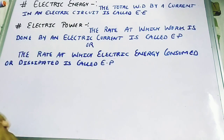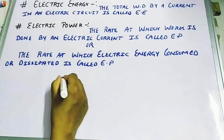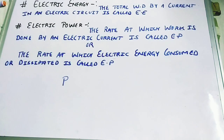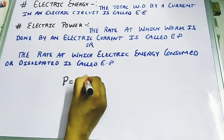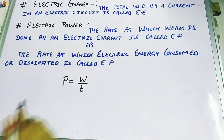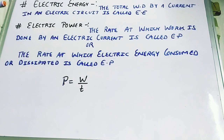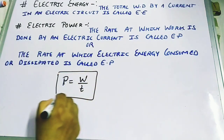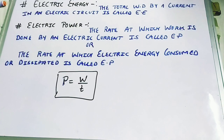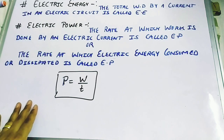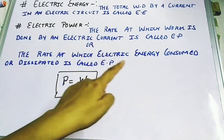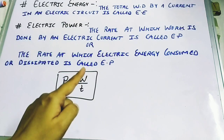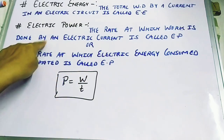What is electrical power? Power is equal to work per unit time, or we can say the rate of doing work is known as power. So the power formula is P = W/t. The rate at which work is done by an electric current is called electric power.